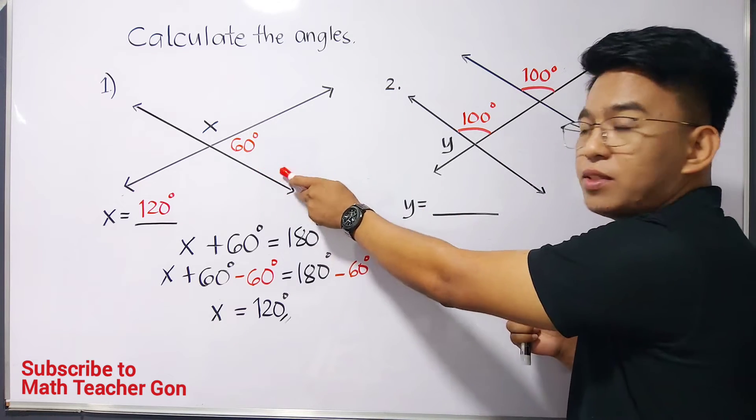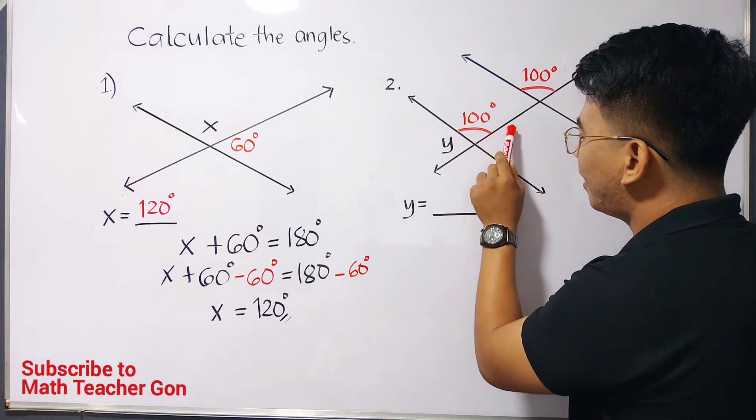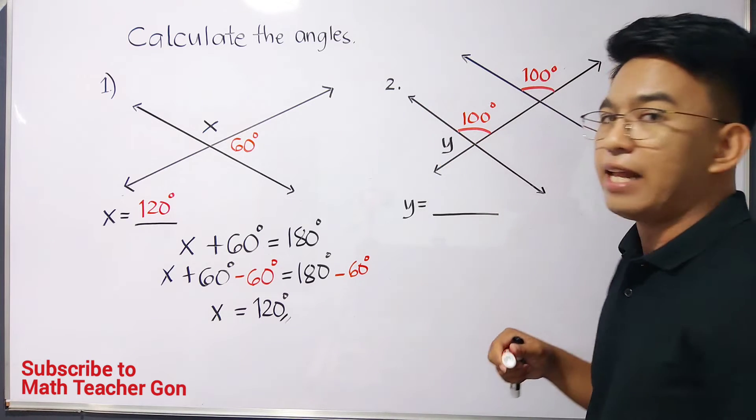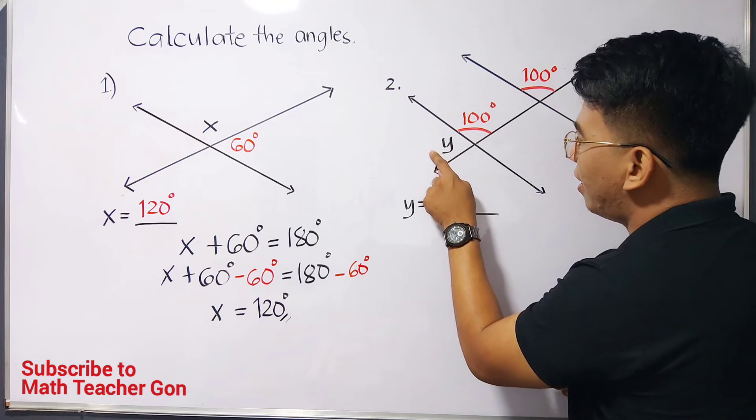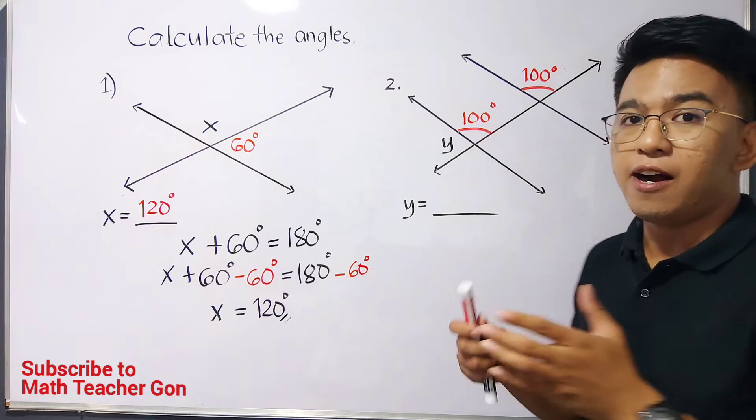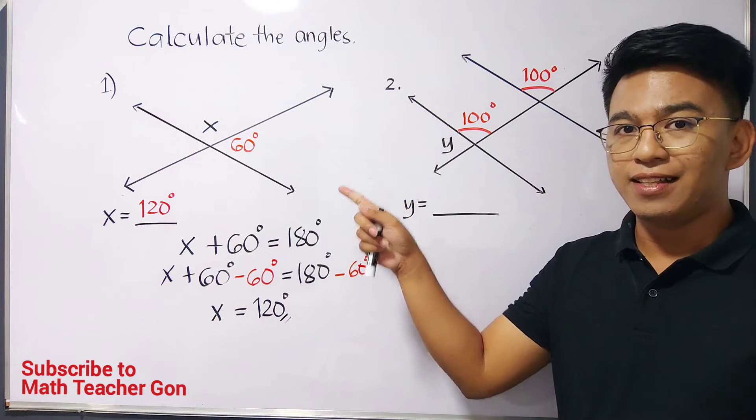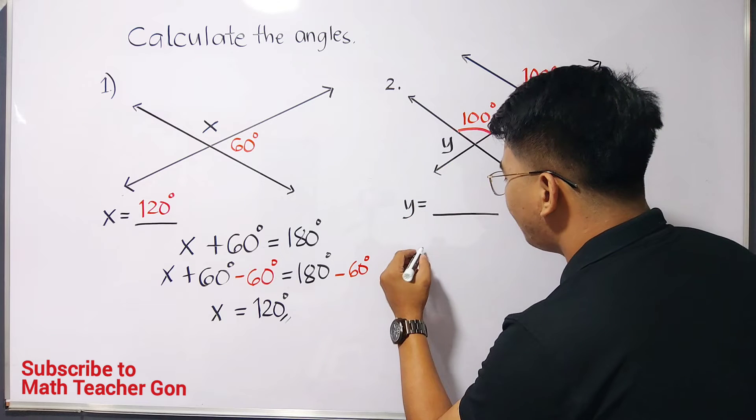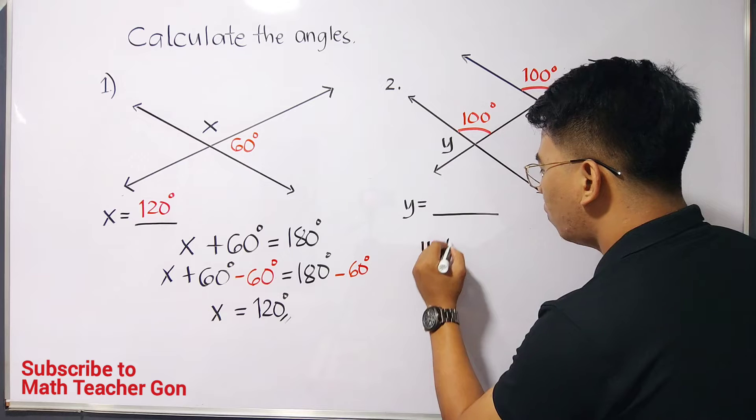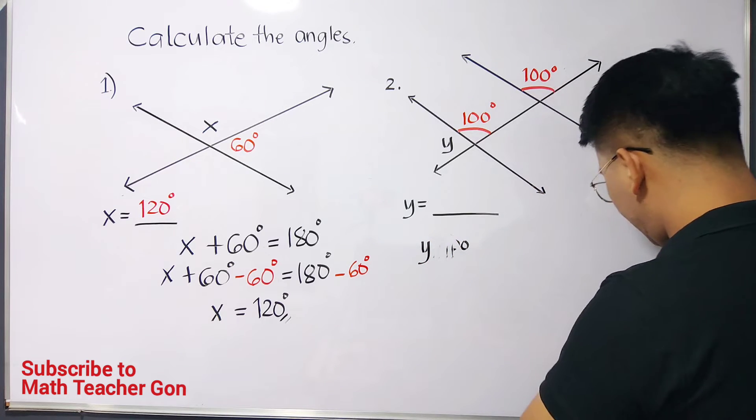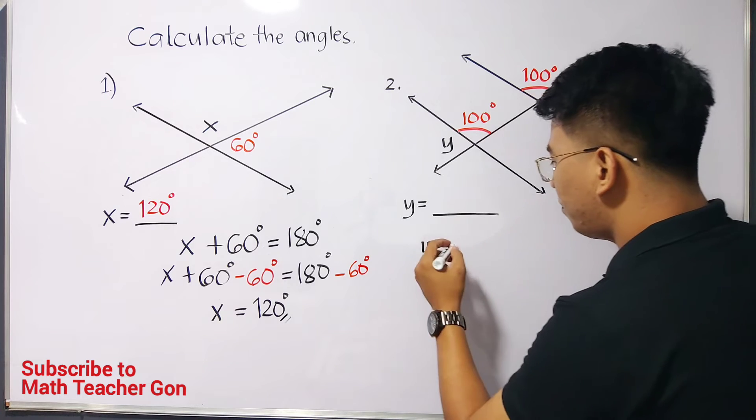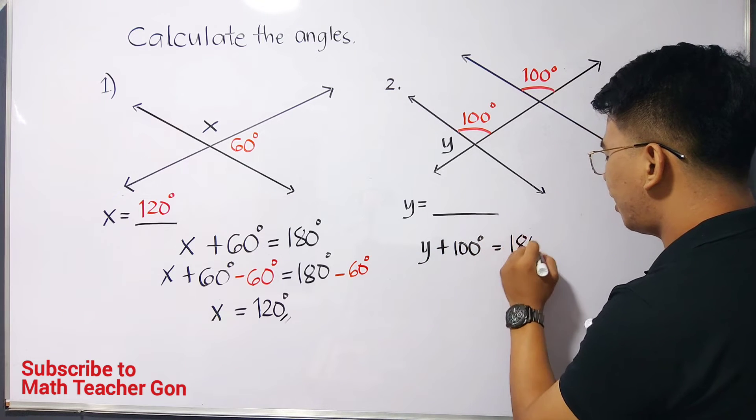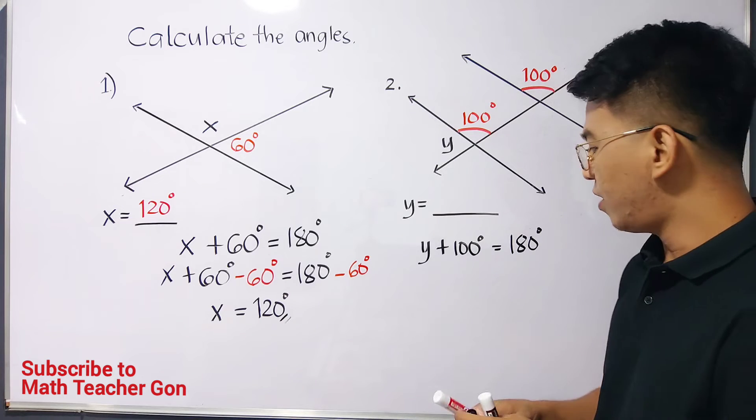And remember, from our previous discussion in item number 1, we have here a straight line. We have here a straight line, here the straight line, and then we have here another line that cuts this straight line. Meaning, this y angle and this 100 degree angle are also supplementary angles like that one. Now, to solve that same process, we will create an equation.